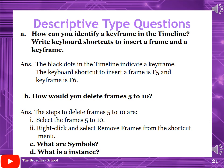Descriptive type questions to do in your notebook: first, how can you identify a keyframe in the timeline, and what are the keyboard shortcuts to insert a frame and a keyframe? Answer: black dots in the timeline indicate a keyframe. The shortcut to insert a frame is F5, and for a keyframe it is F6. Second, how would you delete frames 5 to 10? Steps: select frames 5 to 10, right-click, and select Remove Frames from the shortcut menu. The C and D parts ask what are symbols and what is an instance — find those answers from your book or the video.